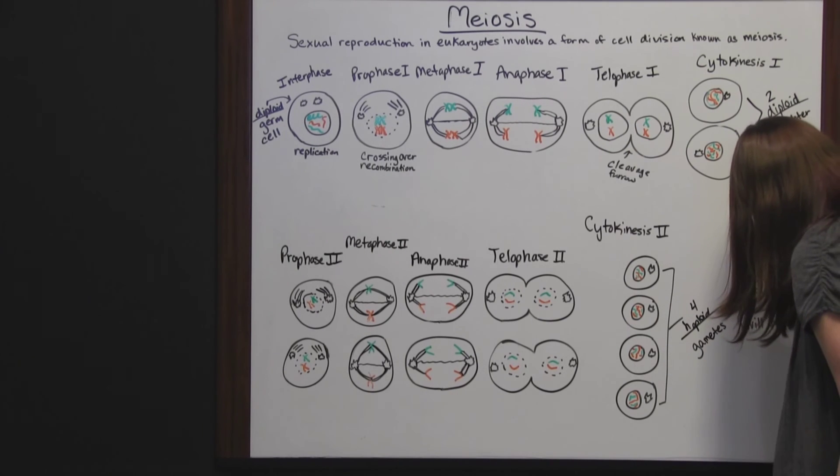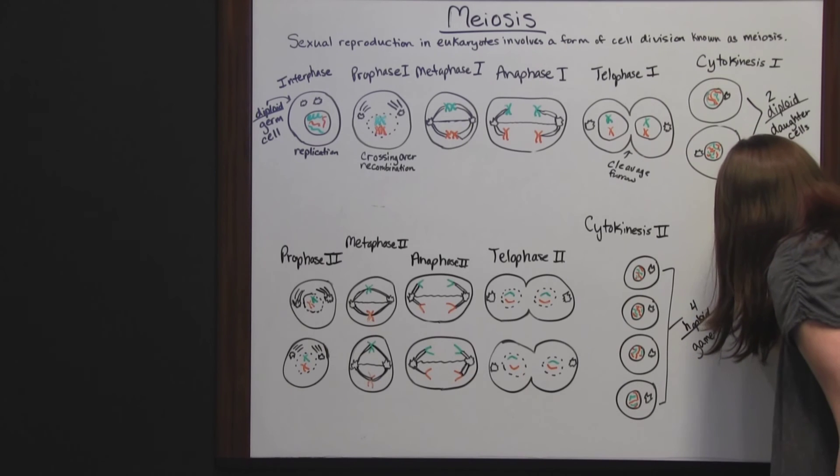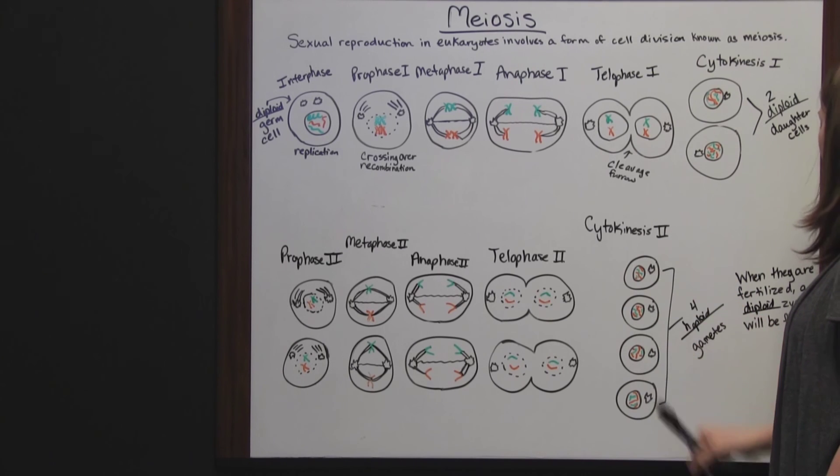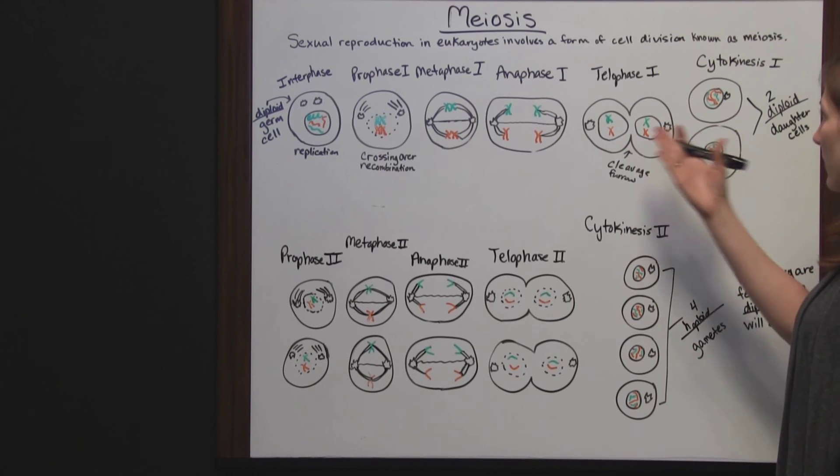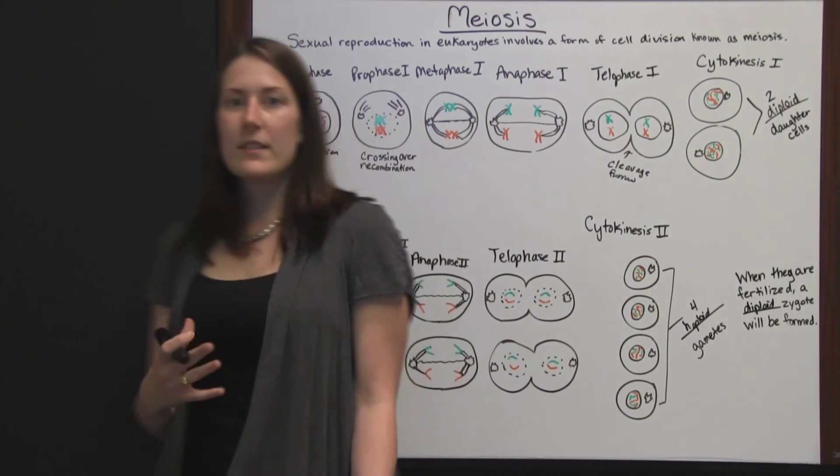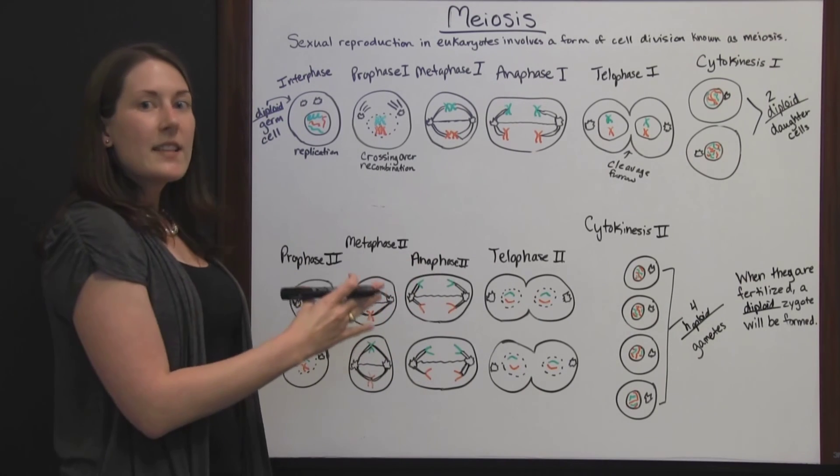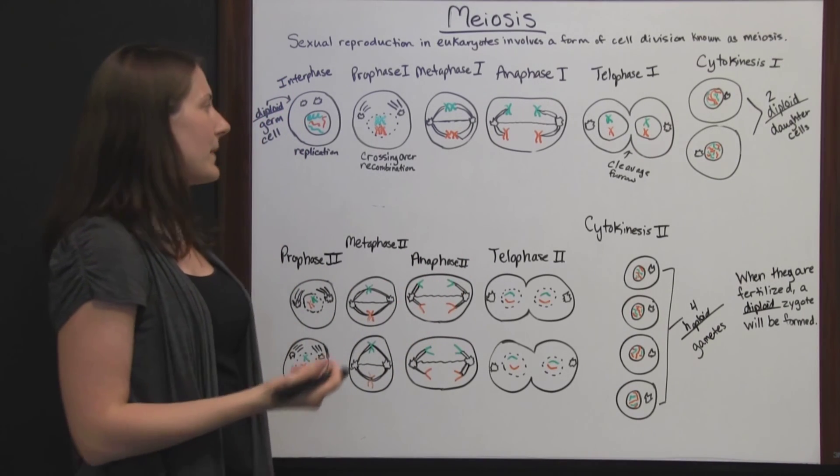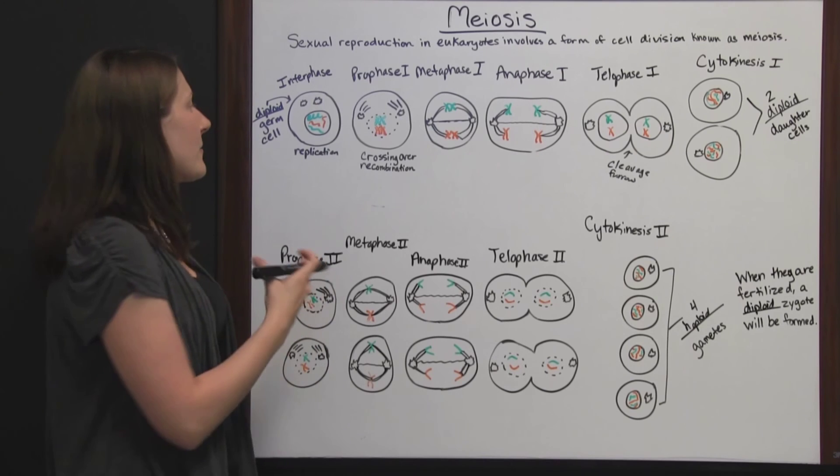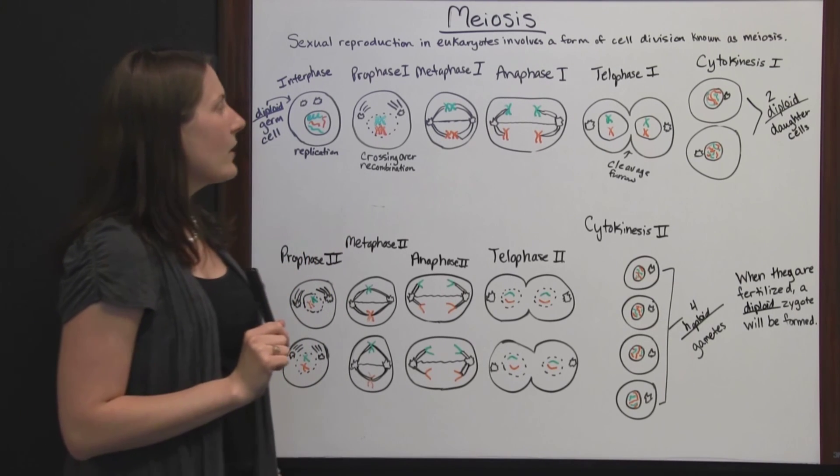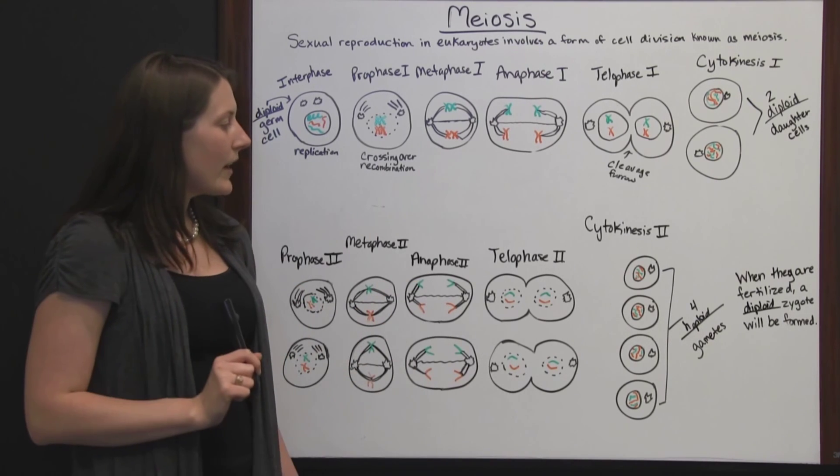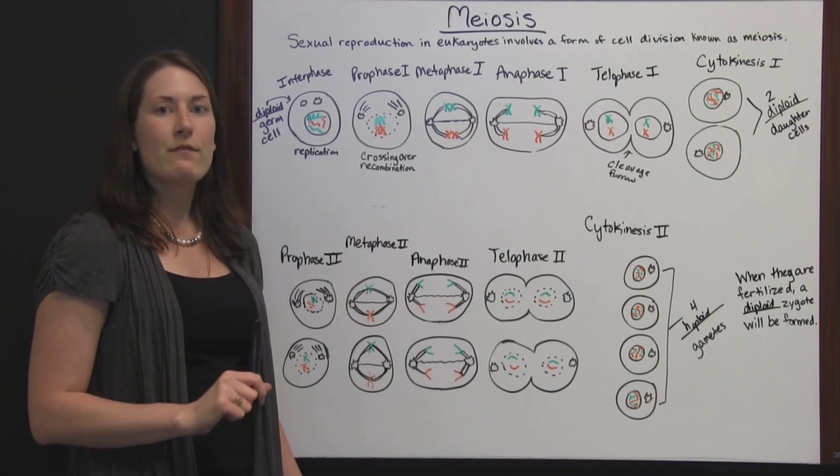These gametes are ready to be fertilized. When fertilized, a diploid zygote will be formed, and they can create a new eukaryotic organism. Meiosis has a two-part process and goes through the same phases as mitosis, but instead of getting an exact copy, you're mixing genetic material from maternal and paternal parents. At the end, you have four haploid gametes, each with genetic information from both parents.